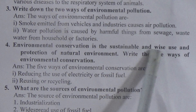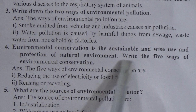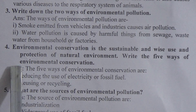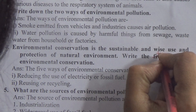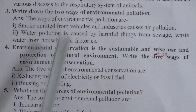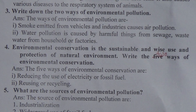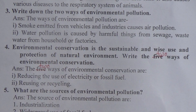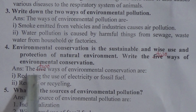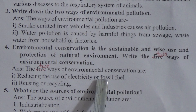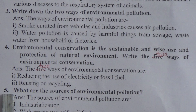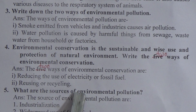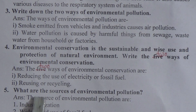Question 4: Environmental conservation is the sustainable and wise use and protection of the natural environment. Write the two ways of environmental conservation. Answer: The two ways of environmental conservation are — first, reducing the use of electricity or fossil fuels; and second, reusing or recycling.